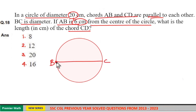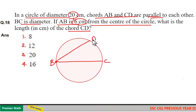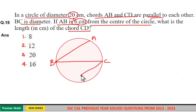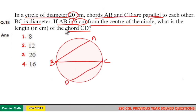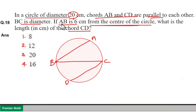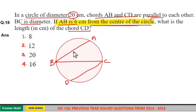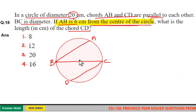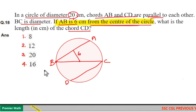If we consider this as A, AB is parallel to CD. These two lines are parallel and AB is 6 centimeters from the center of the circle. That means the shortest possible distance from the center of the circle to chord AB is equal to 6 centimeters.